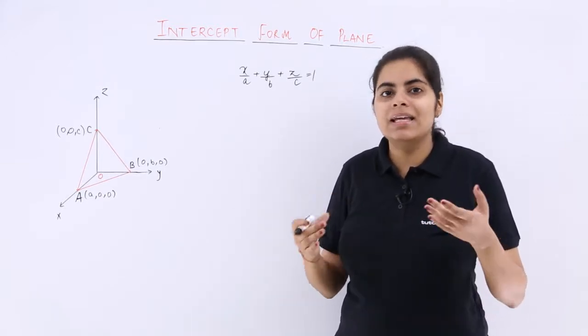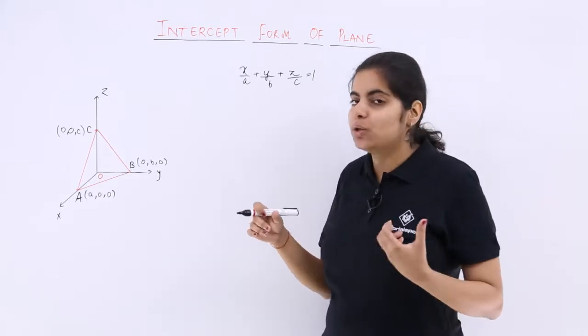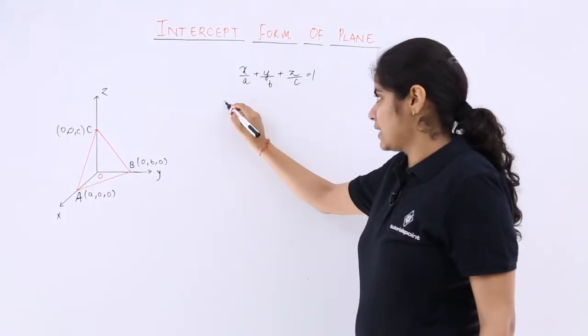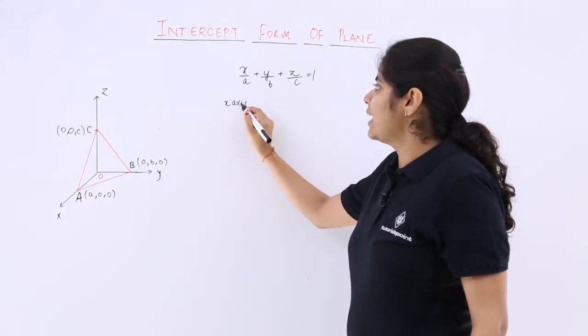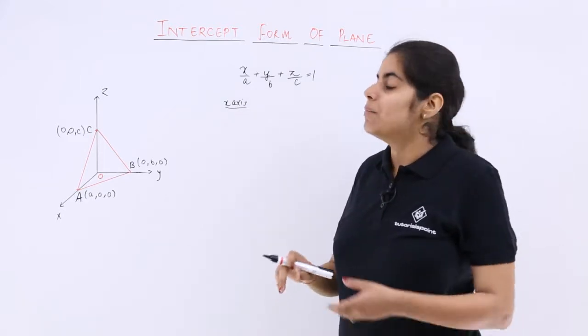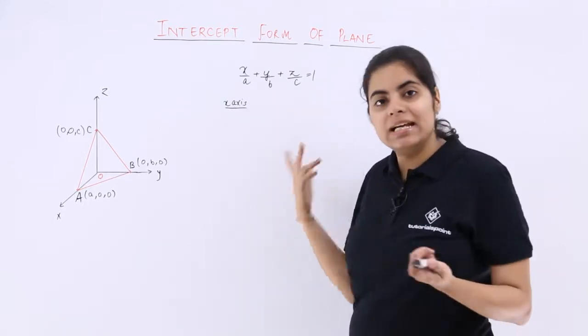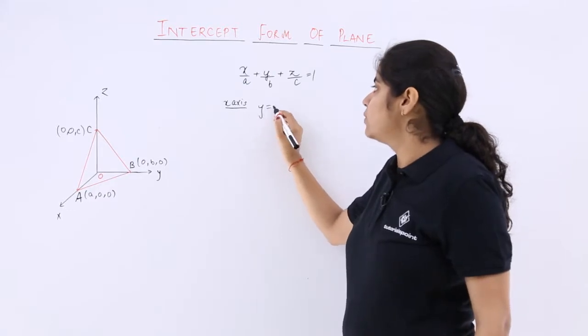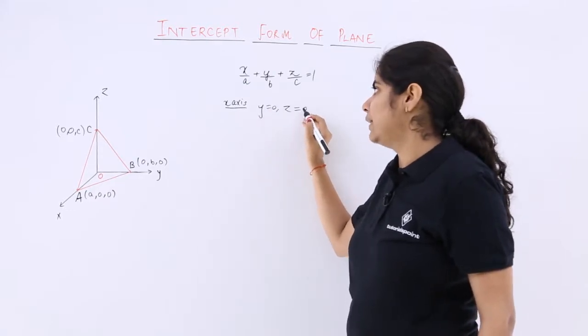Now, what are the intercepts and where are they? To find the intercept on the x-axis, simply put y = 0 and z = 0.